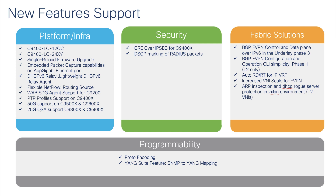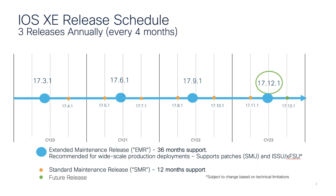We have added two new hardware line cards to the 9400 platform along with 50GB optic support. We are also adding infrastructure features such as the single reload feature for software upgrades, as well as security features like GRE over IPSec and IPv6 enhancements for EVPN fabric, and proto-encoding in the programmability area. The next release will be IOS XC 17.12.1, a standard maintenance release targeted for November 2023. Please stay tuned for more information. Thank you so much.